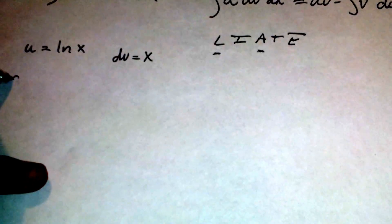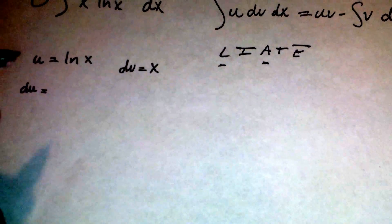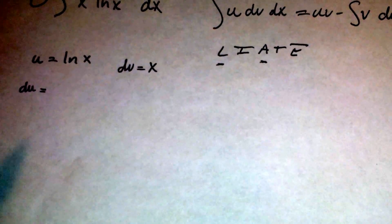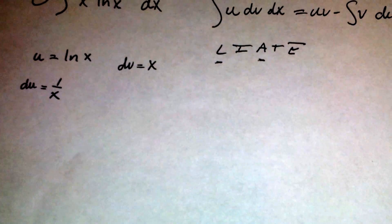To find du, we'll simply take the derivative of ln x, which is 1 over x dx.